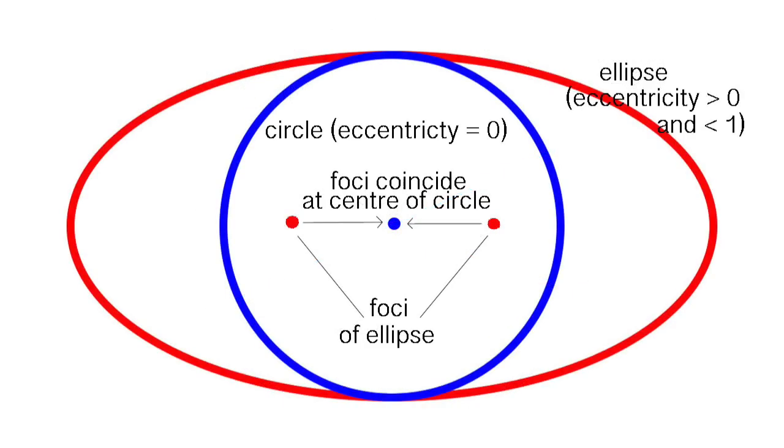A circle can also be defined as a special kind of ellipse in which the two foci are in the same place and the eccentricity is zero. Both the circle and ellipse are types of conic section, which is a subject I've done a separate video about.